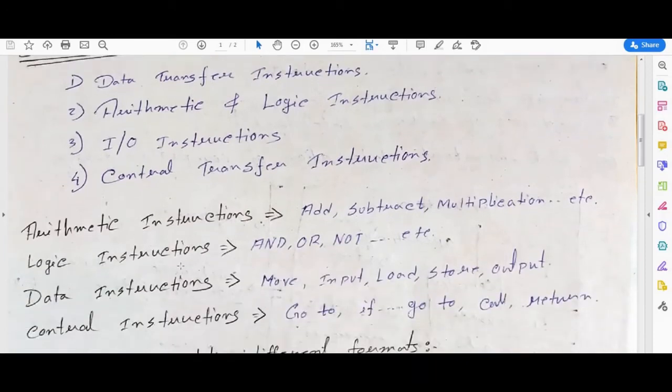Now let's define what each instruction does. Arithmetic instructions include add, subtract, multiplication, etc. These are for performing arithmetical work. Logic instructions include AND, OR, NOT, etc. These are for performing logical related work.